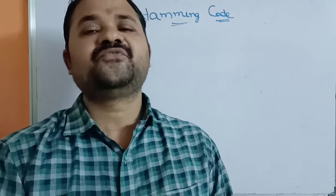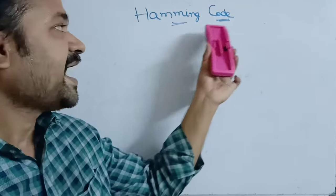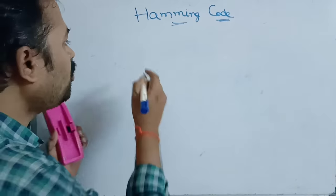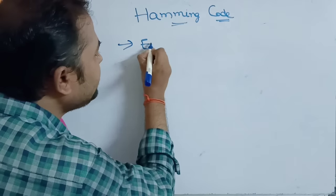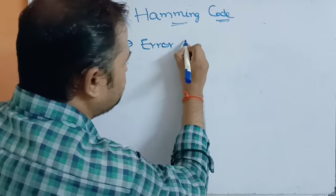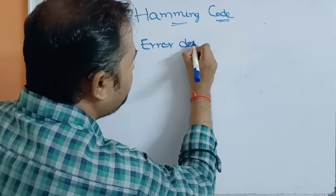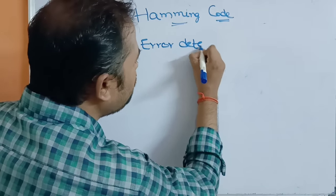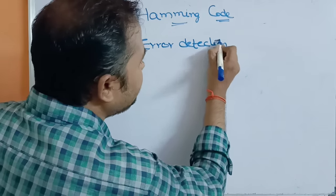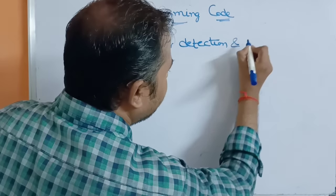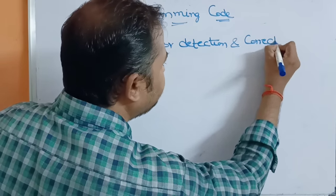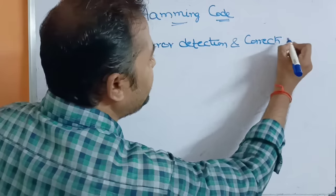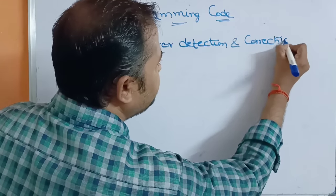In this video, we are going to discuss Hamming code. Hamming code is an error detection and correction approach. By using the Hamming code technique, we can detect errors as well as correct them.